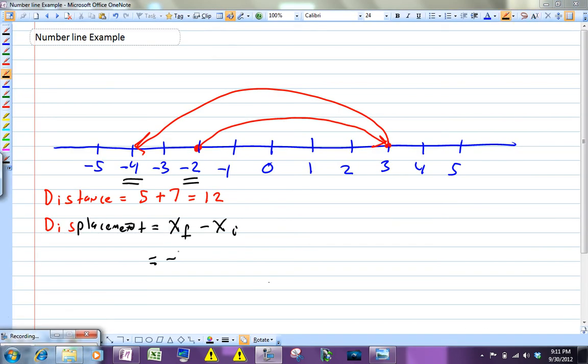Your final position is going to be minus 4, and your initial position, which we're subtracting, was negative 2. So minus 4 minus minus 2 is the same as plus 2.